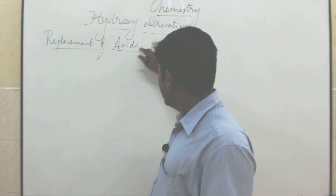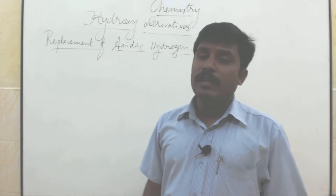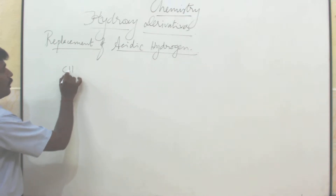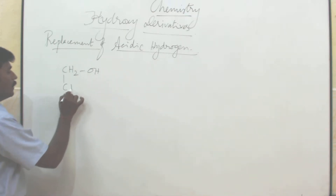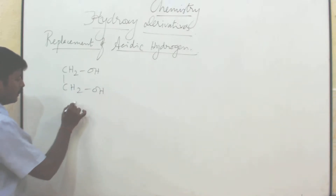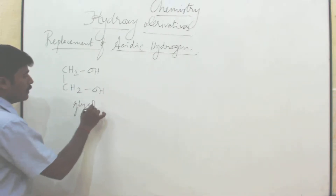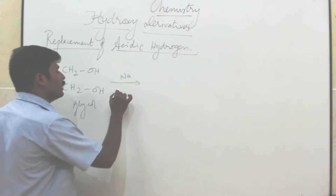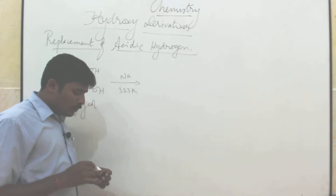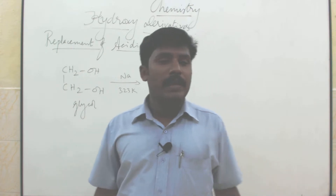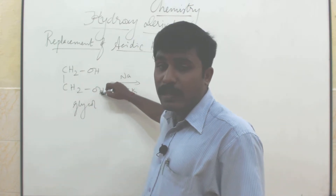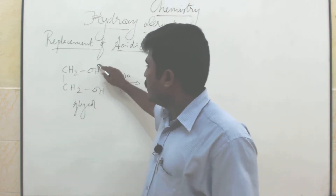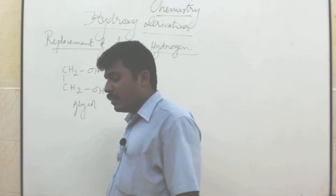Replacement of acidic hydrogen — how we are going to remove the hydrogen atom? Ethylene glycol, formula CH2OH and CH2OH, reacts with sodium atom at 323 Kelvin. Initially, one of the primary alcoholic groups is removed — that means one hydrogen atom is removed by sodium.